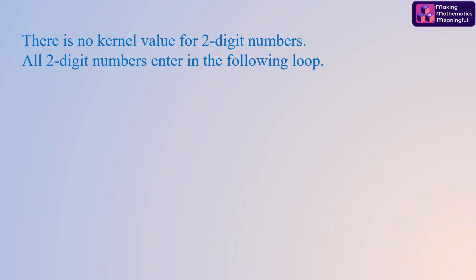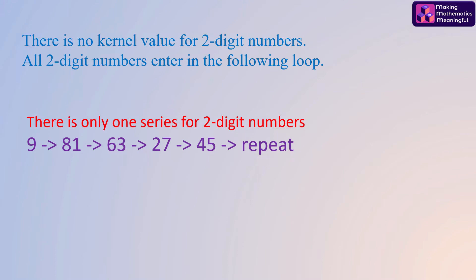As mentioned, there is no kernel value for two-digit numbers. All two-digit numbers enter the following loop: 9 → 81 → 63 → 27 → 45, and this loop repeats itself.